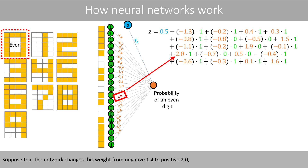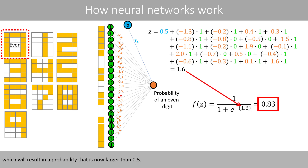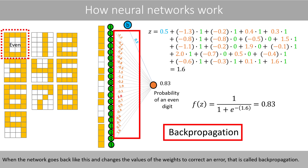Suppose that the network changes this weight from negative 1.4 to positive 2.0. That change will result in a value that is now equal to positive 1.6 instead of negative 1.8, which will result in a probability that is now larger than 0.5. Since the value in the output node is now greater than 0.5, the network will now correctly predict that the image contains an even digit. When the network goes back and changes the values of the weights to correct an error, that is called backpropagation.